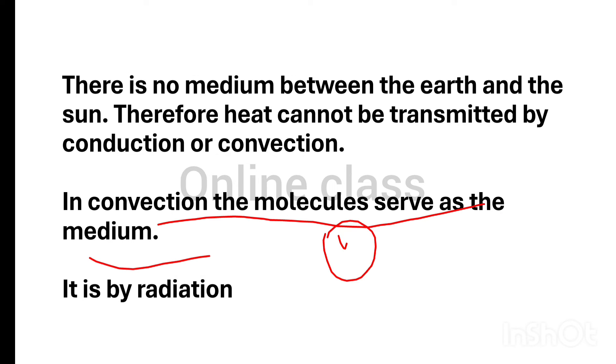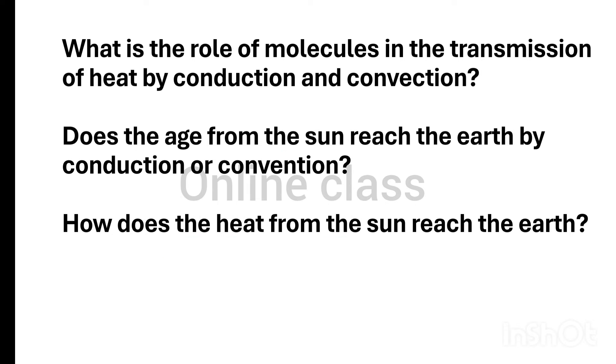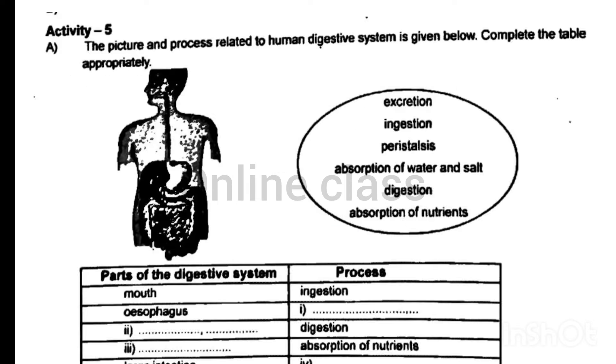Convection, conduction — radiation is the third method. The heat from the sun reaches the earth by radiation.